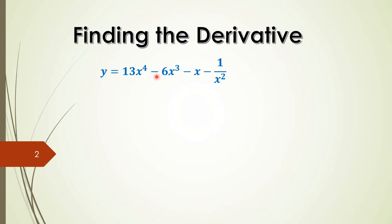Because we have the variable in the denominator. It's not friendly for taking the derivative of it.